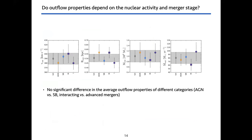We look at the average properties of outflows depending on these categories. Here you can see the velocity, radius, mass, and mass outflow rate averaged for AGN, starburst, merger, and interacting systems. Looking at this, we do not see a clear difference in these properties depending on these characteristics of the system.